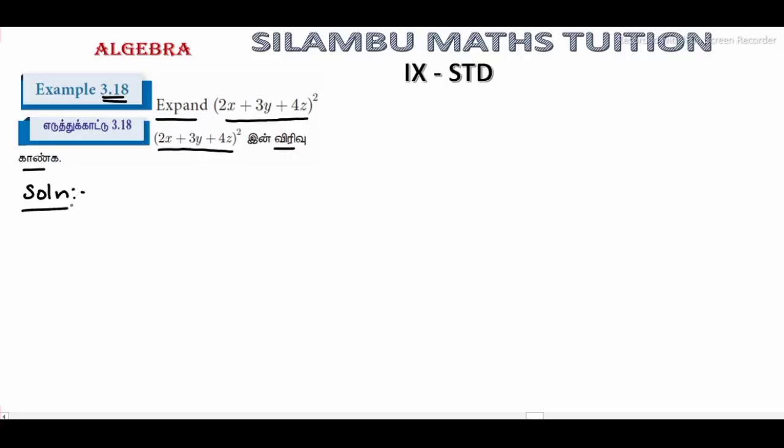Either nambha expansion of trinomial formation change pannele dheerla. It is called a plus b plus c the whole square is equal to a square plus b square plus c square plus 2ab plus 2bc plus 2ca.